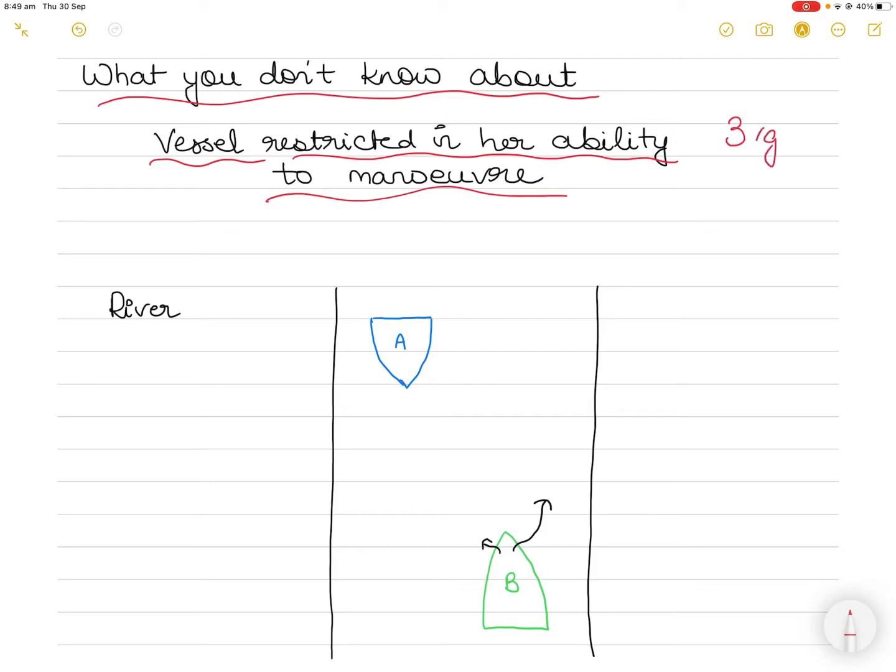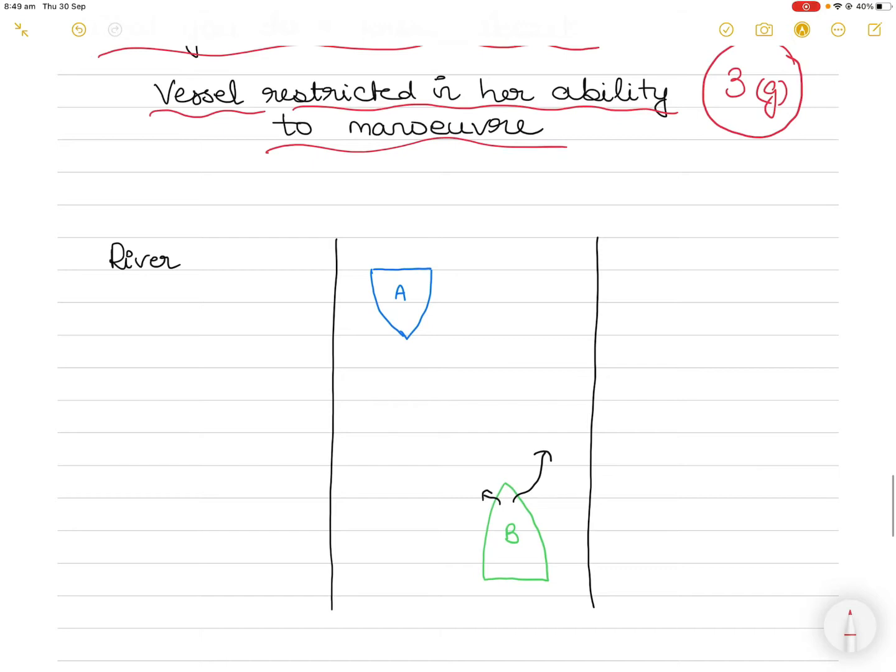So this is Rule Number 3, Part G, which explains what is a vessel restricted in her ability to maneuver. Now understanding this part will help you to clear up the concept about this kind of vessel. Let's understand what is the case study here and how this rule applies to the case study so that we can understand the application of this rule.